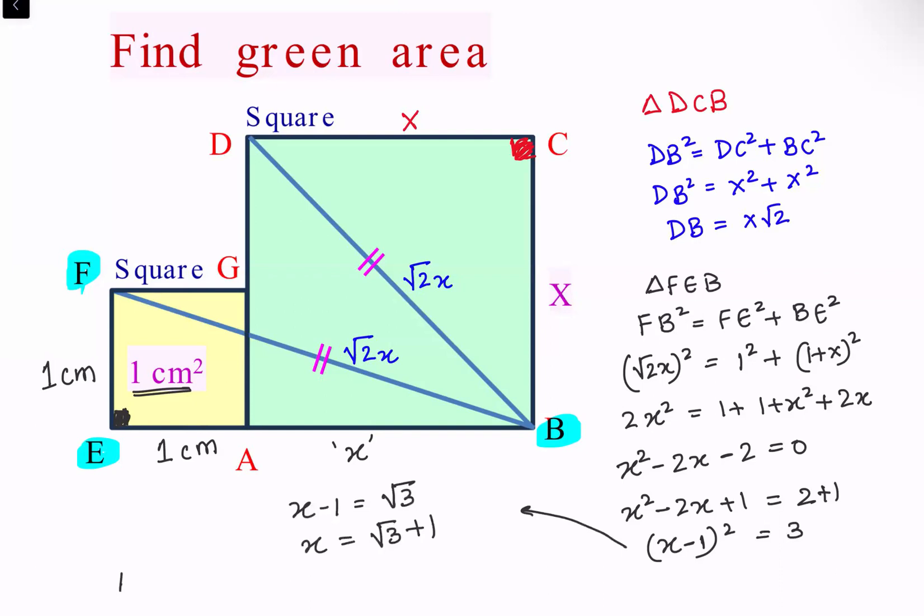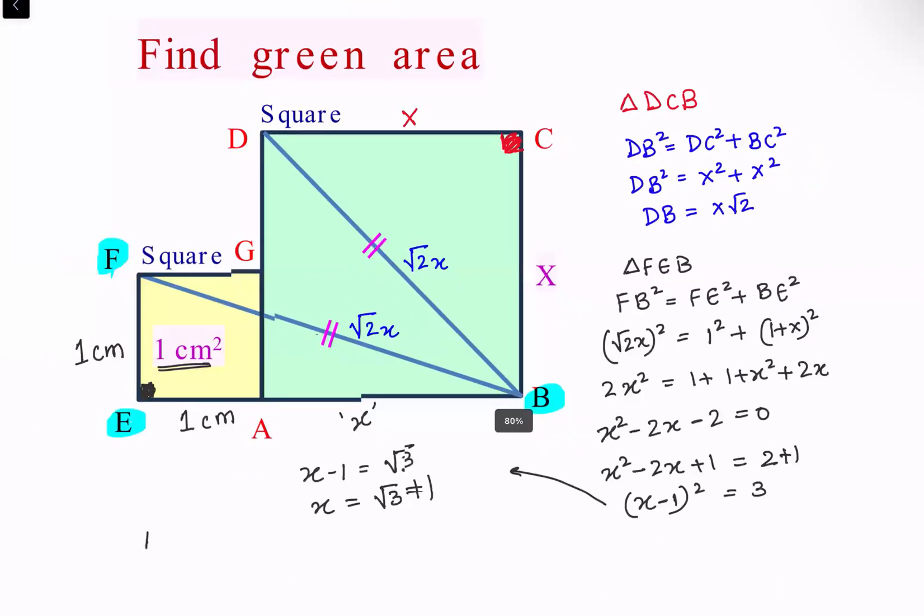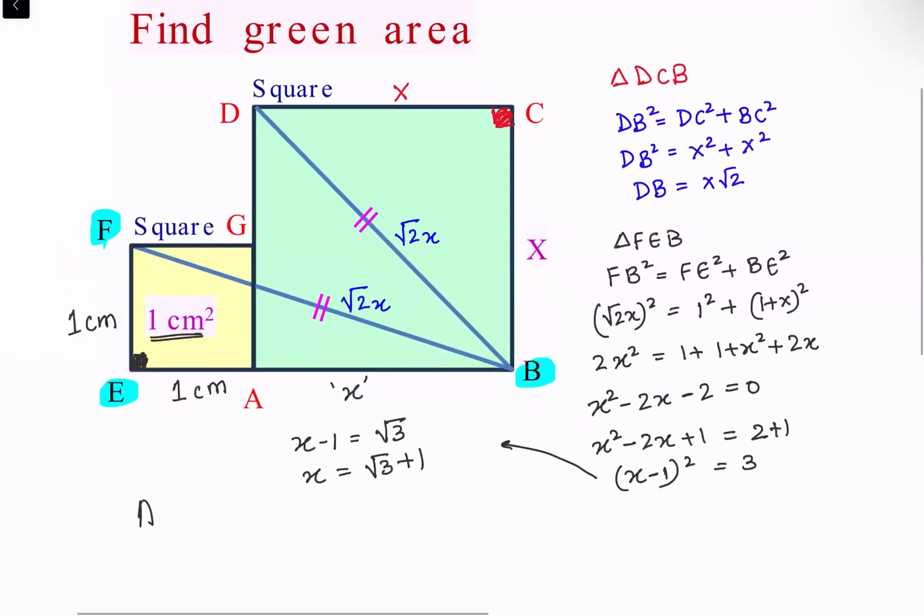Now we have to find the area of the square. Area of square is X square, which is root 3 plus 1 square. This is 3 plus 1 is 4 plus 2 root 3 centimeter square.